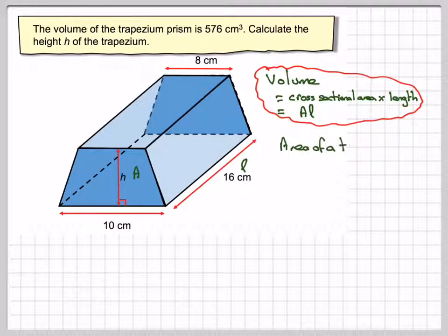Right, so the area of a trapezium. We're going to find the area of the trapezium first. Now the area of a trapezium is that you add together the two parallel sides. That's normally written as A plus B times the height, which is what we need to actually find to answer the question, divided by 2.